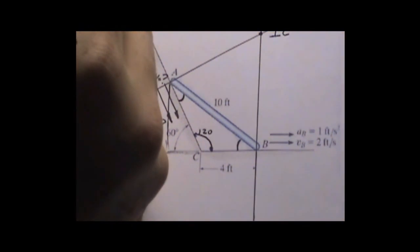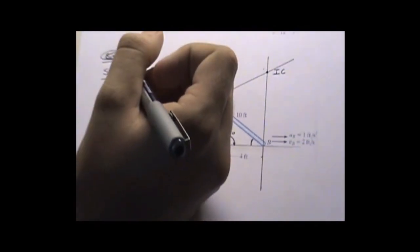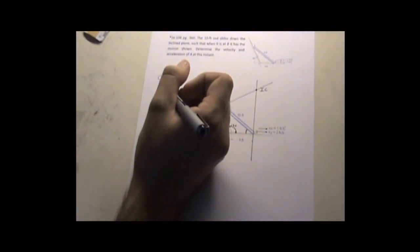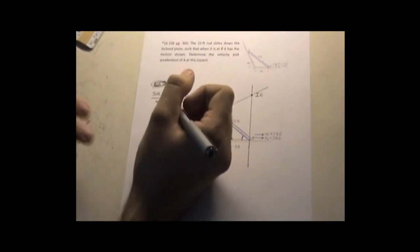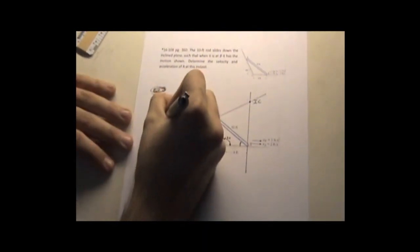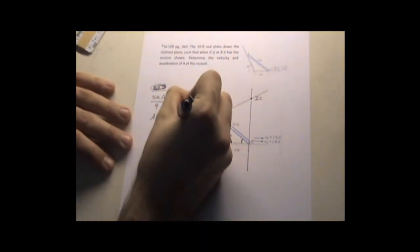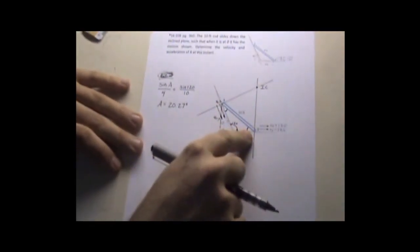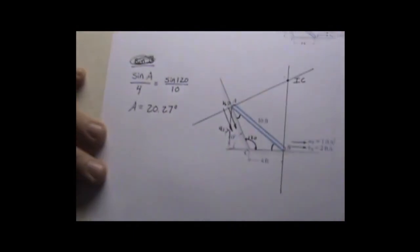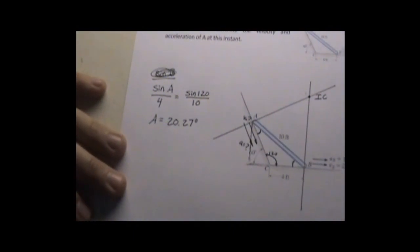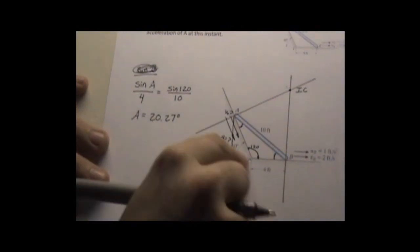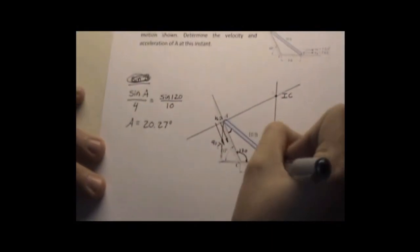Figuring this out, A equals 20.27 degrees. Now we know from geometry that all three angles inside of a triangle have to add up to 180, so we take this and we want to find the angle to B.